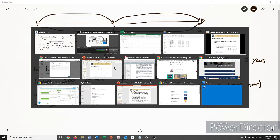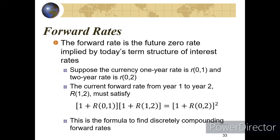The relationship between these different rates should satisfy: (1 + R from 0 to 1) times (1 + R from year 1 to year 2) equals (1 + R from today to year 2) squared. We square here because this rate is compounded twice over two years, since we assume annual compounding. This is the relationship to get the forward rate when dealing with discretely compounded rates.